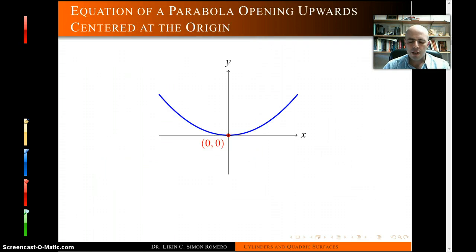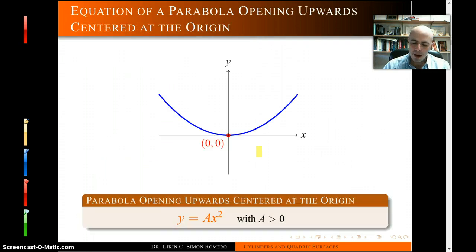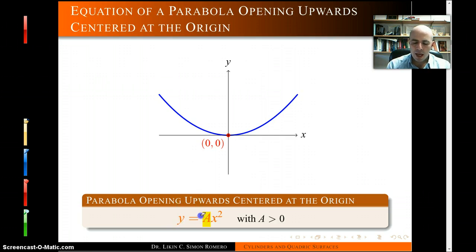Quick features about parabolas: parabolas look like this, and the thing you can identify is if A is positive, the parabola opens towards the positive y-axis. If A is negative, it opens downward, and the same thing happens when it opens towards the x-axis or negative x-axis.